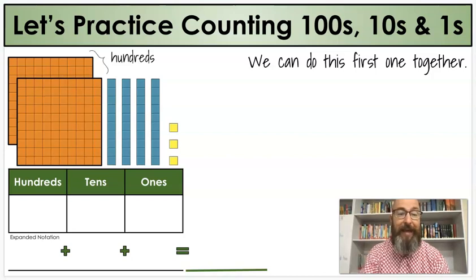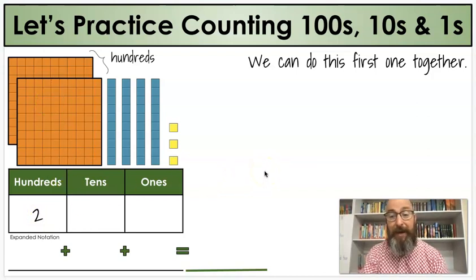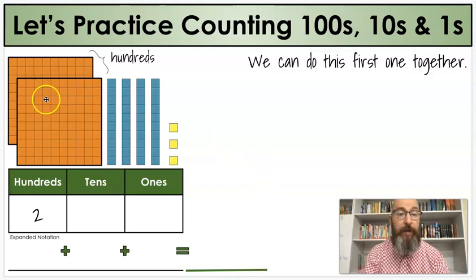The first thing we want to do is count the hundreds. And in this, we can see that there are 1, 2 hundreds. So we're going to put a 2 in the hundreds place. If there's two hundreds, we're going to count by 100 two times. So we're going to have 100, 200. So those are worth 200.